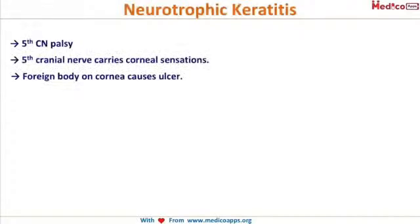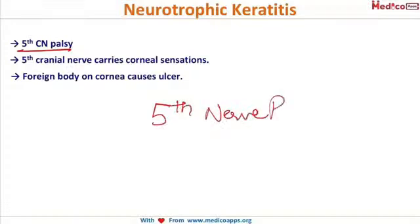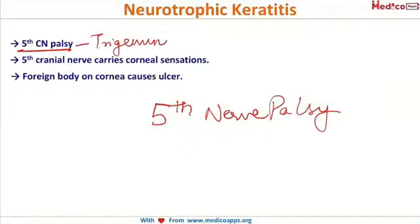Another condition, similar but different, is neurotrophic keratitis, caused by fifth cranial nerve (trigeminal nerve) palsy. These two can be confusing in exams, so here is an easy mnemonic: the letter 'T' is present in both 'trigeminal' and 'neurotrophic' — trigeminal, trophic — both share 'tr', helping you link the fifth nerve to neurotrophic keratitis.